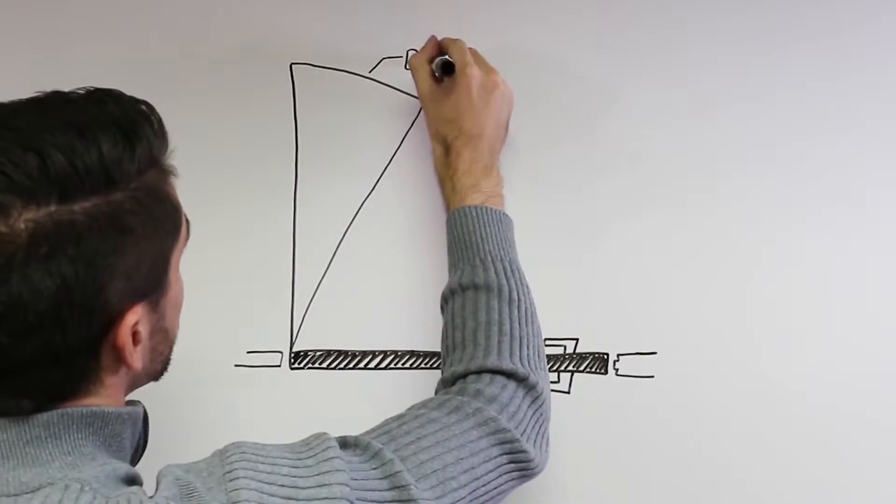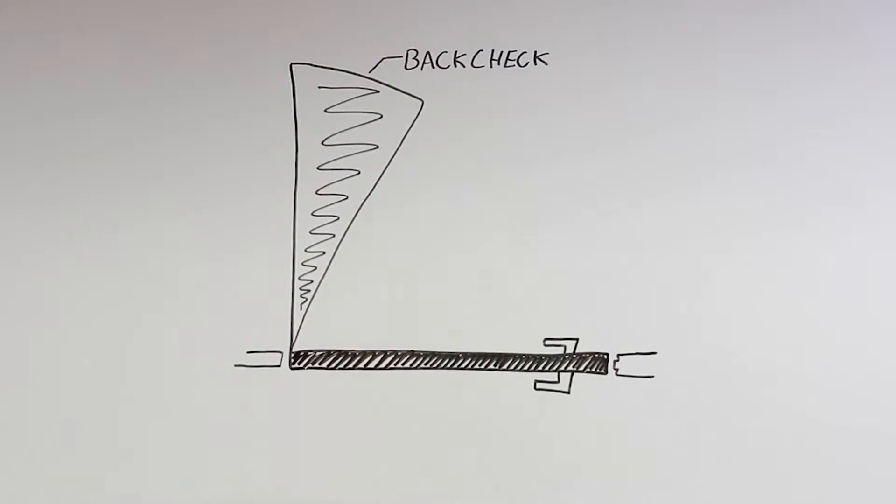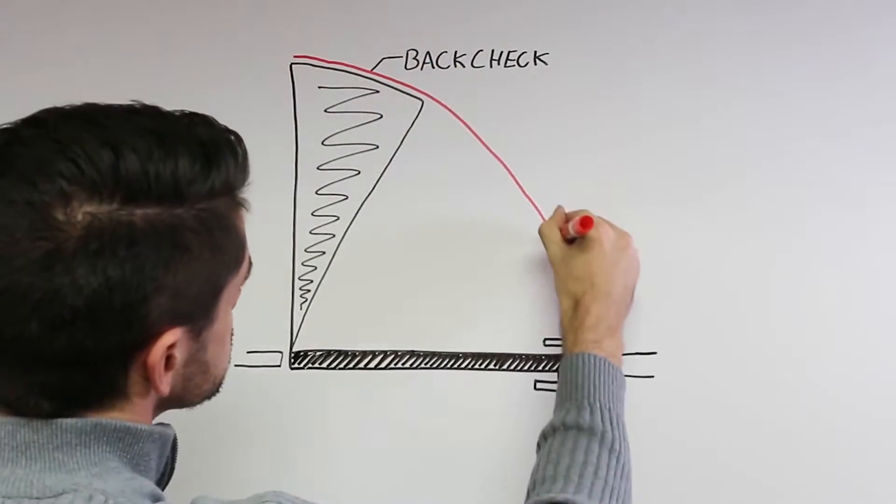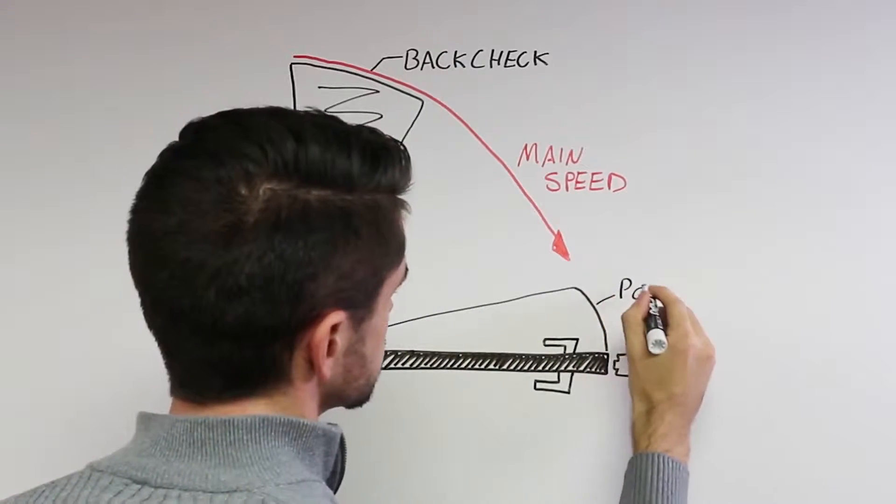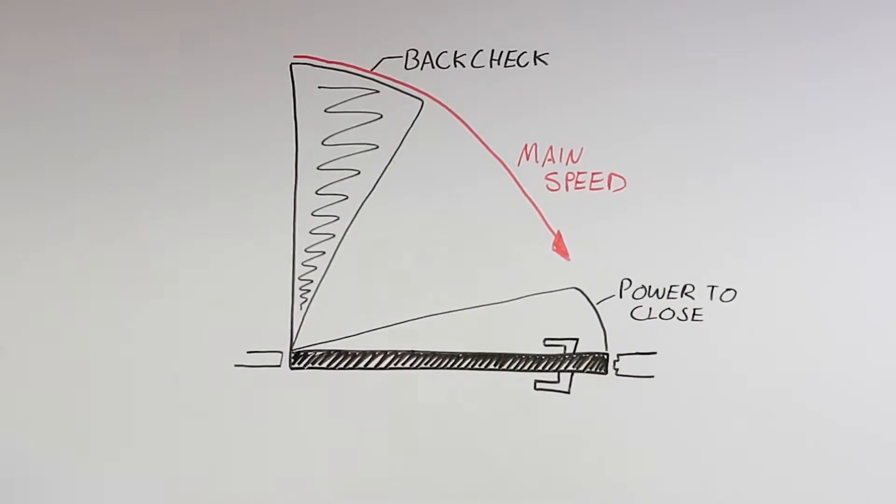Closers slow the opening speed of the door as it approaches a fully open position. Closers control the closing speed of the door from its fully open position until a few degrees of its latched position. And closers provide the power to close the door.